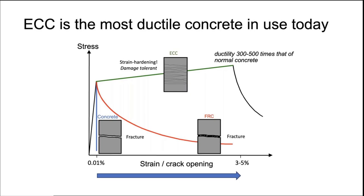Here is a schematic showing a tensile stress versus strain relationship. For normal concrete, it has a linear elastic behavior and then a sudden drop in load when a crack forms across the specimen. For ordinary fiber reinforced concrete, FRC, it follows a curve where after the crack forms the load capacity continues to decrease as the crack opens up — this is localized fracture behavior.